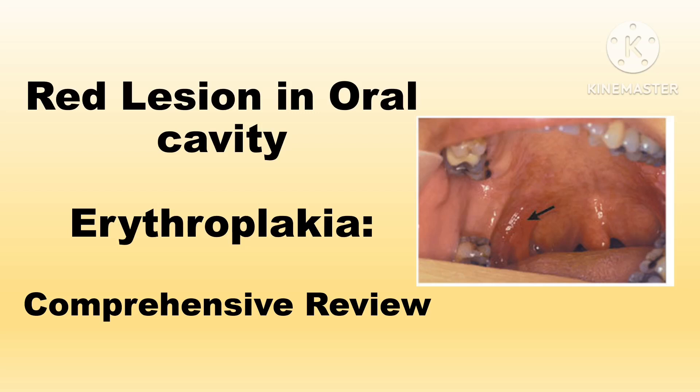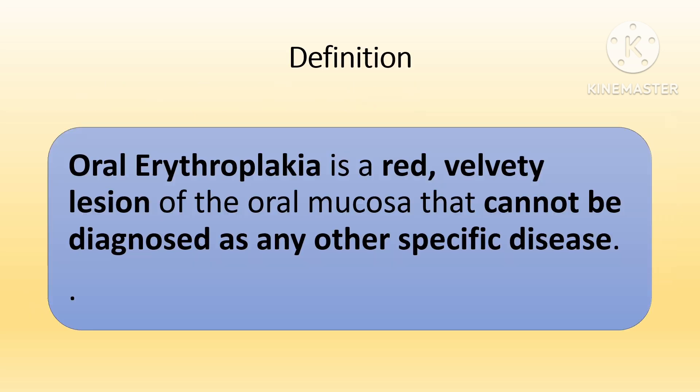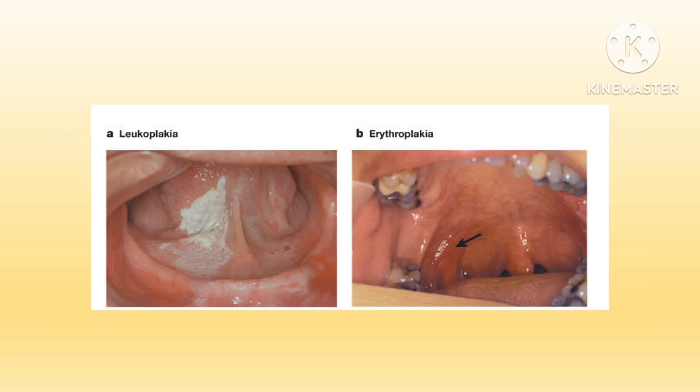Welcome to dental notes and mnemonics. Today we are going to discuss erythroplakia. The definition: oral erythroplakia is a red velvety lesion of the oral mucosa that cannot be diagnosed as any other specific disease. It is often regarded as the oral equivalent of leukoplakia.